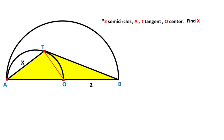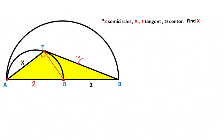First of all, if you connect T and point O, notice that this angle is opposite the diameter, so here must equal 90 degrees. We know that this length is 2 because of the radius. Let's call this length Y, and this length M.